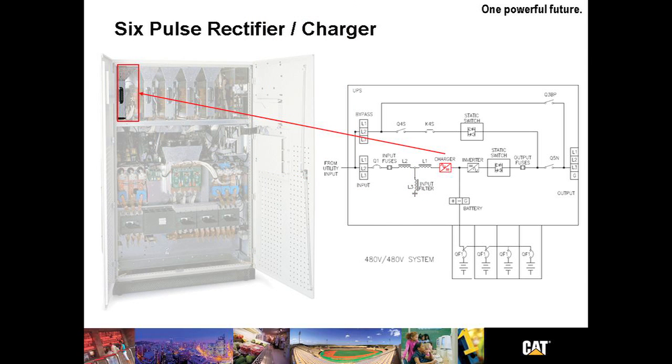Next, the 6-pulse rectifier charger converts AC to DC via 6 SCRs utilizing fully controlled rectification. The frequency of this model is 60 Hz plus or minus 10%.